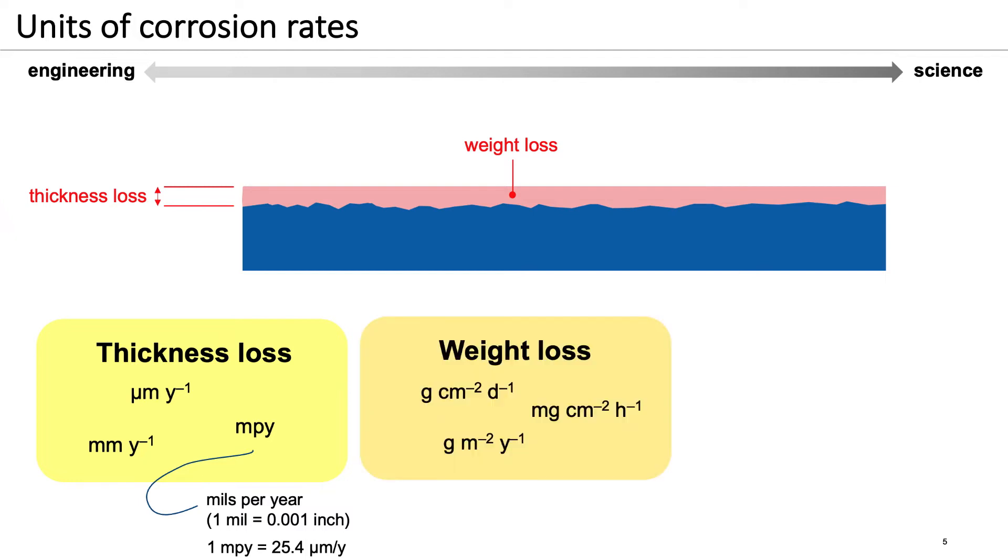Weight loss units, for example, are gram per square centimeter per day or gram per square meter per year, or any similar form where the mass lost per surface area and time is expressed.